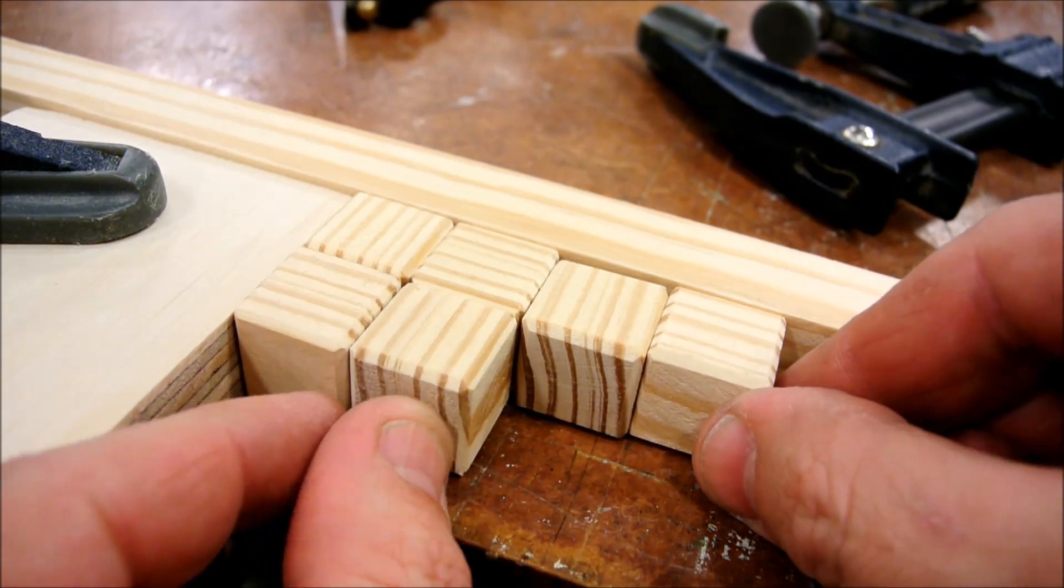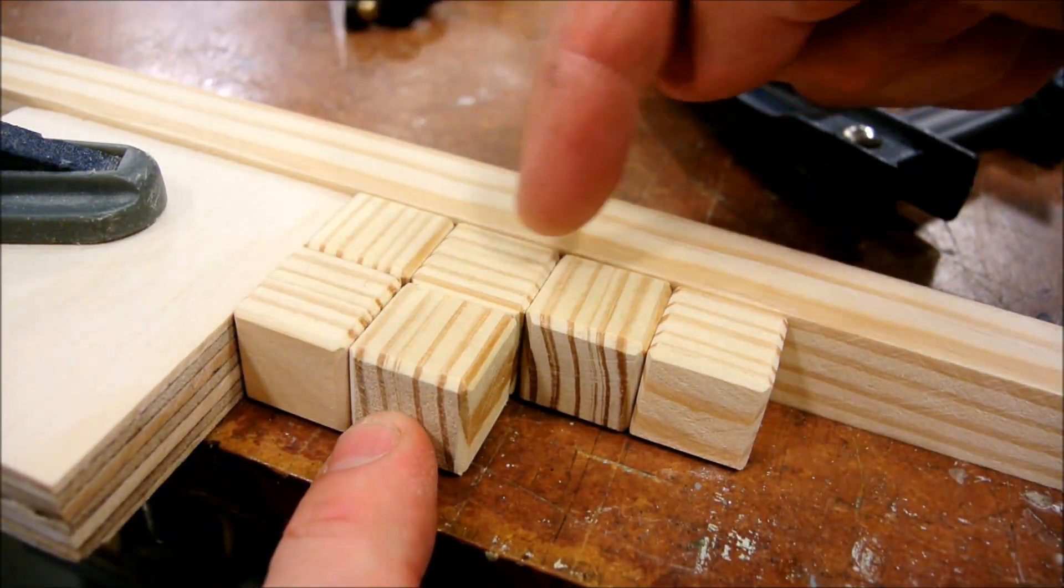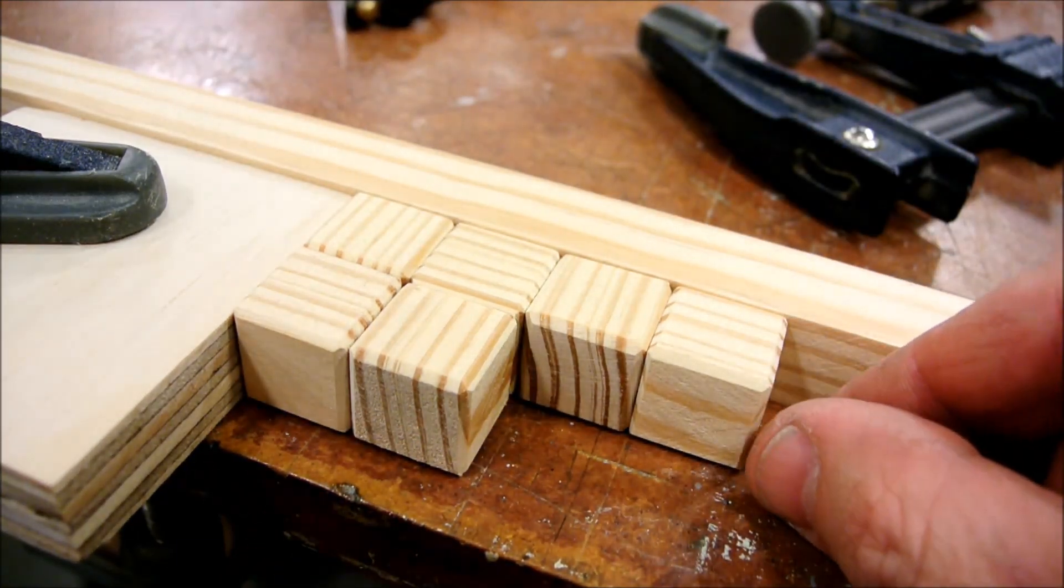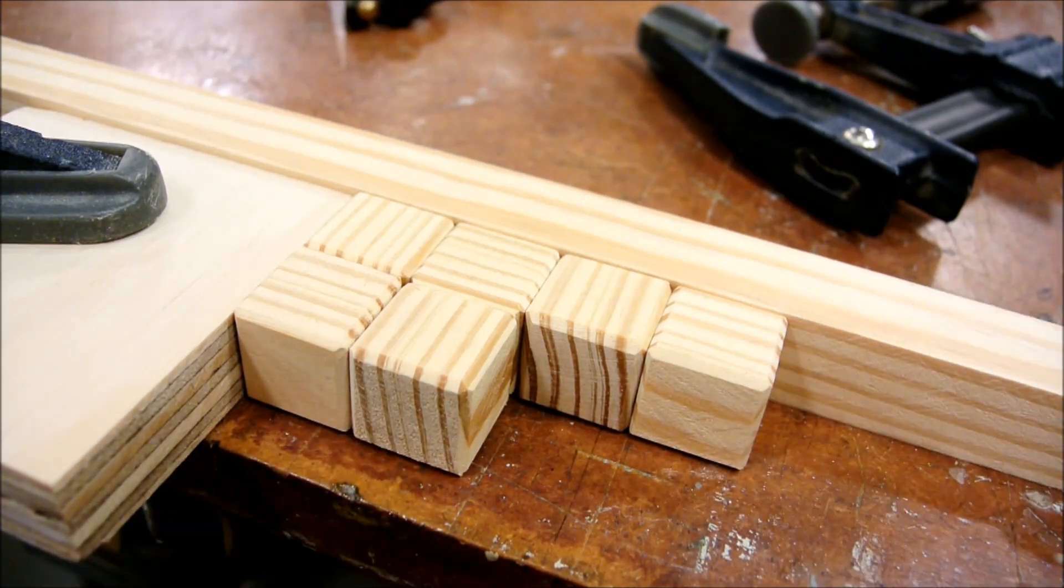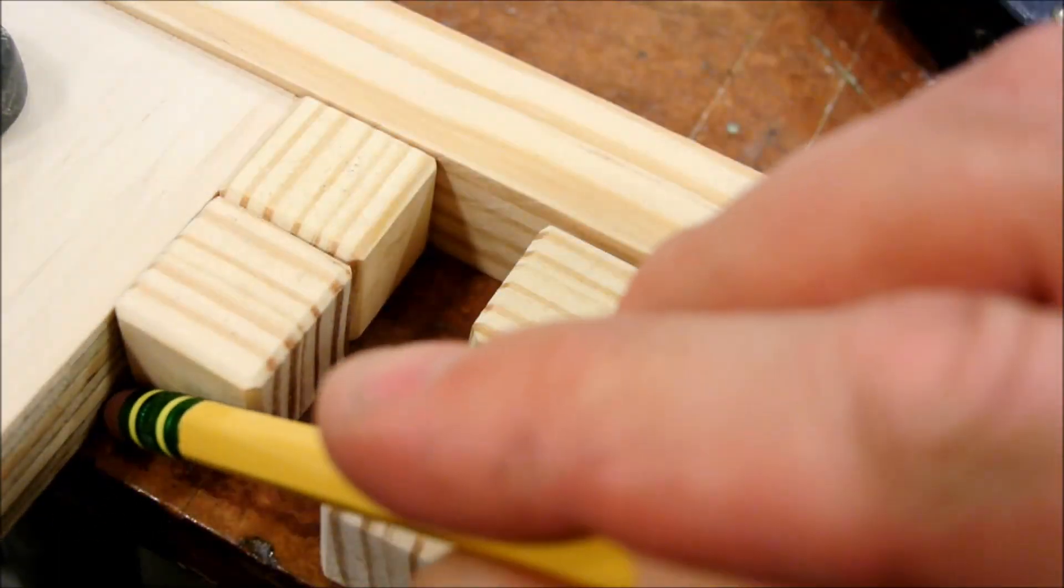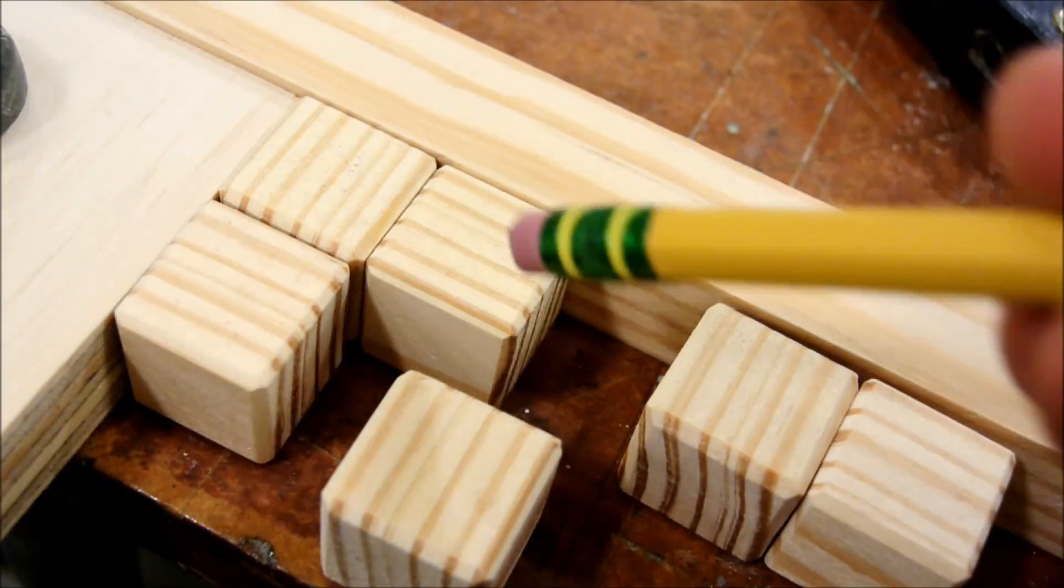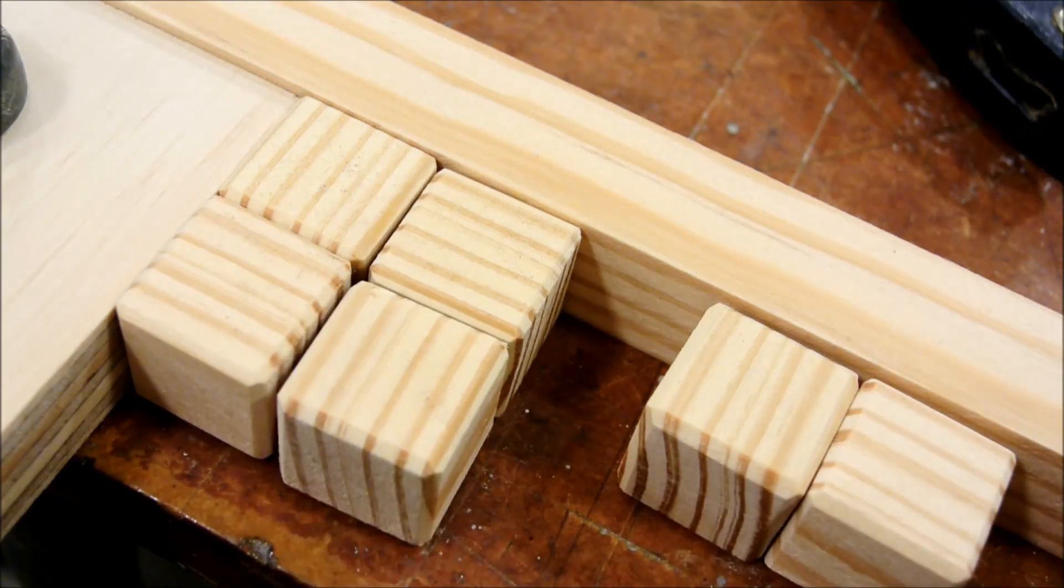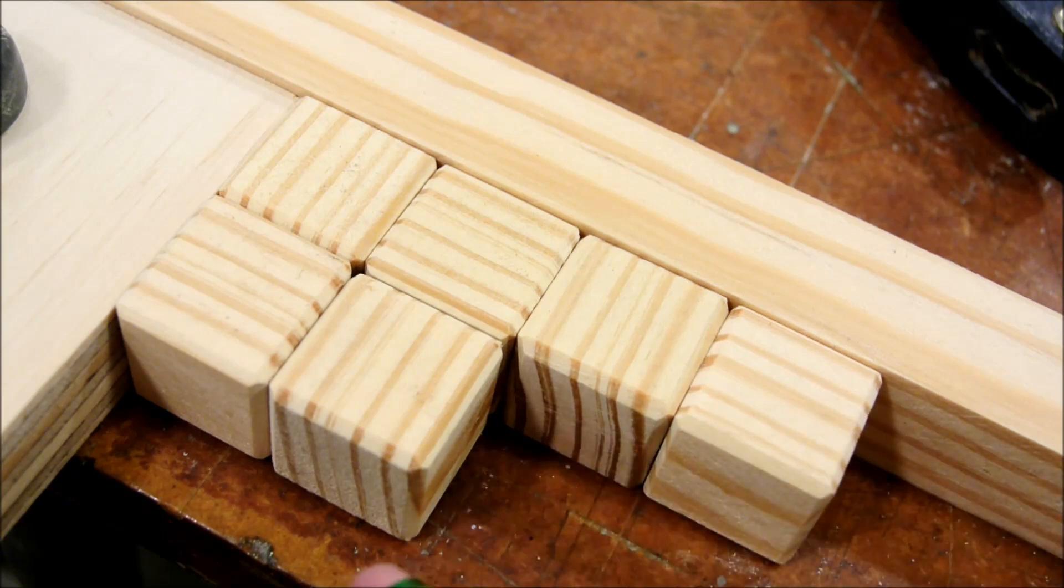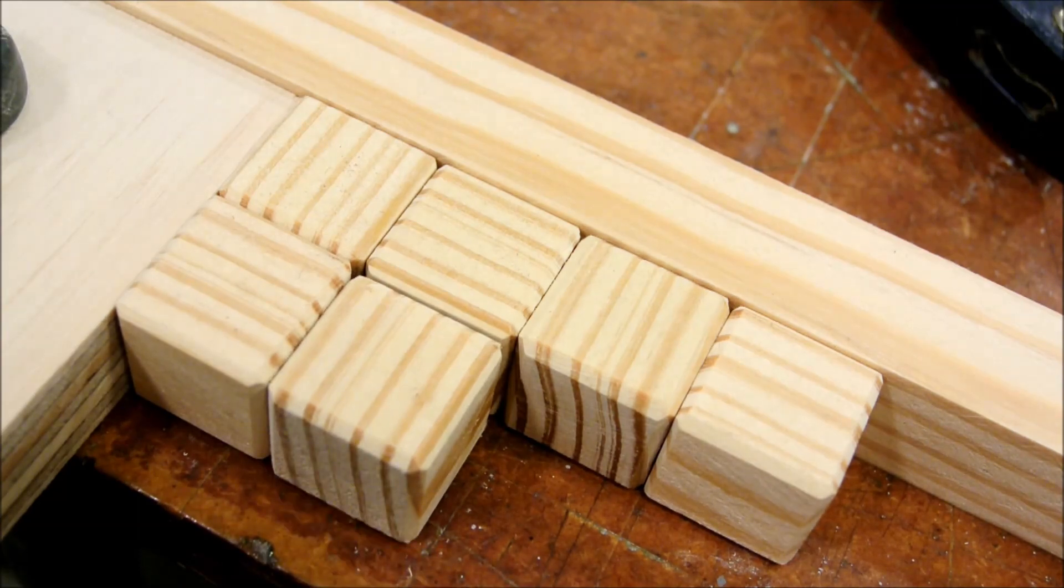I orient each of my cubes in an every other sort of checkerboard pattern with respect to their grain, and that just helps to evenly distribute any variations dimensionally. I glue them one at a time, and I pin them with 18-gauge brad nails. It's a bit of an art to keep from hitting your nails as you progress, but it takes a little bit of trial and error and just practice. The cost is very small in case you make a mistake.